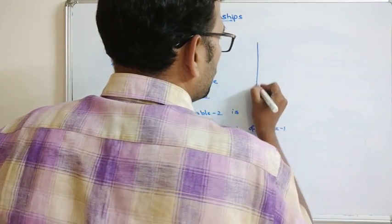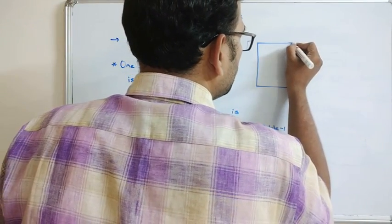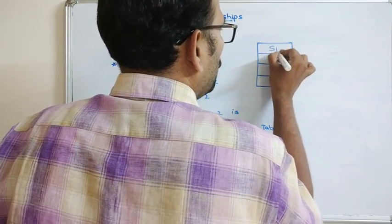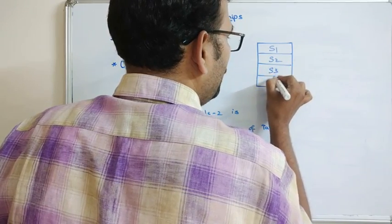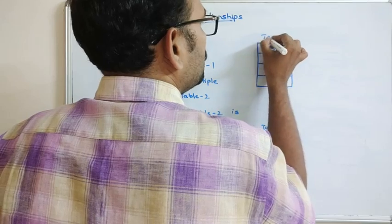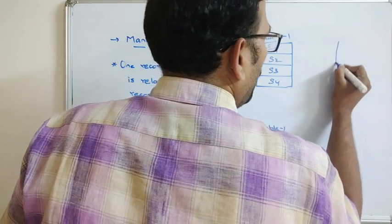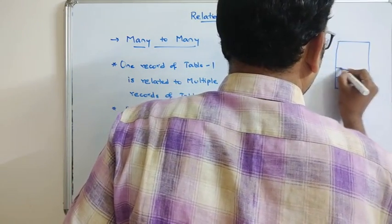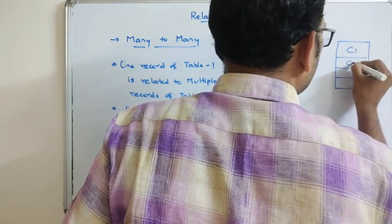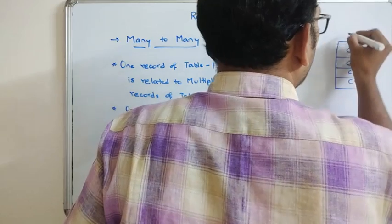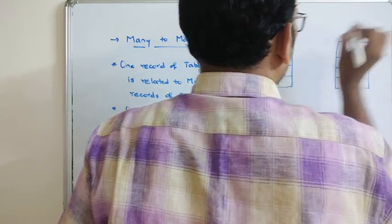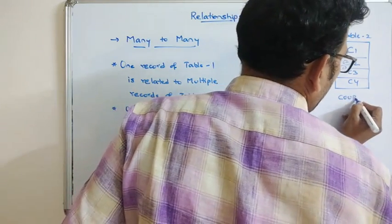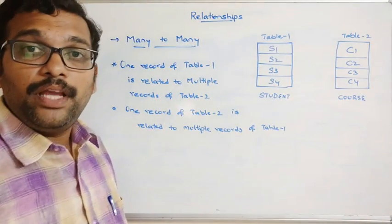For example, consider two tables. Table one is a student table with students S1, S2, S3, S4. Table two is a course table with courses C1, C2, C3, C4. Here you can observe that a student can enroll in multiple courses, and similarly one course can be enrolled by multiple students.